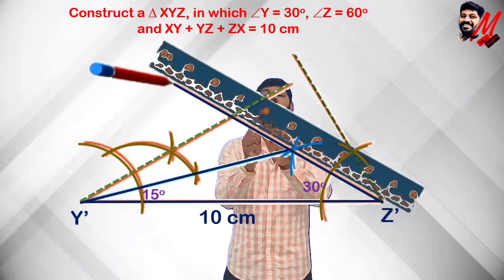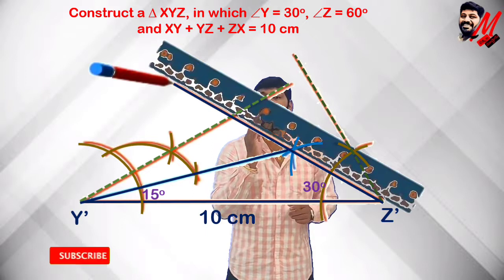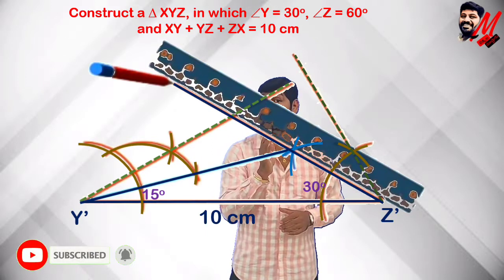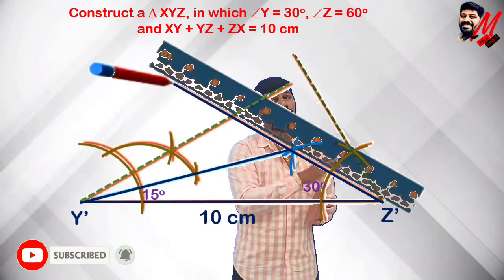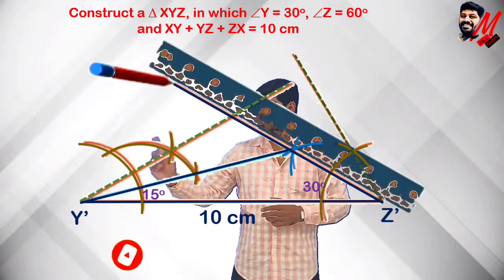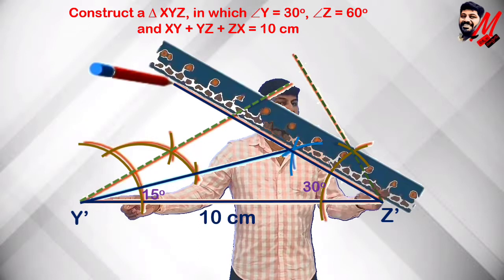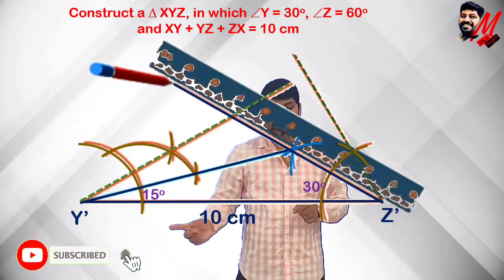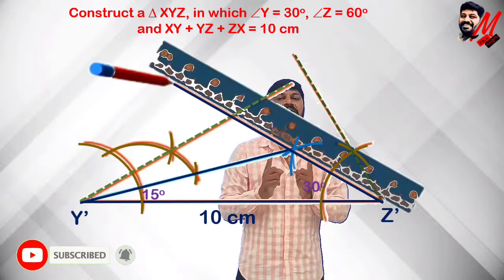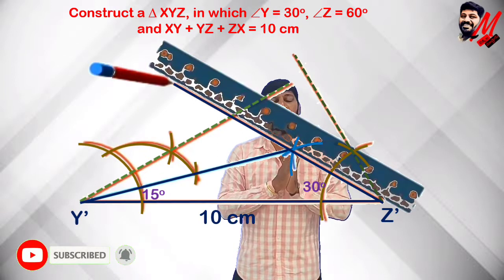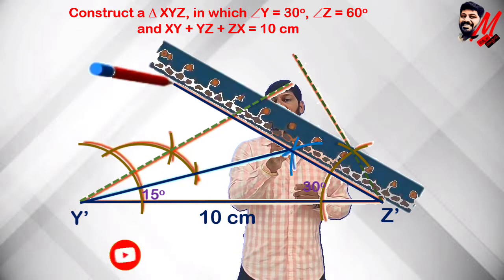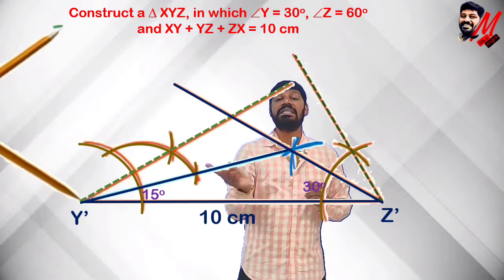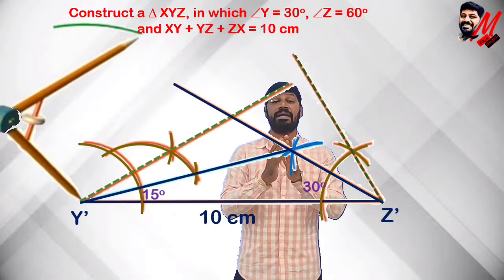Now the two rays from Y' and Z' meet at a point. That meeting point is X. So we draw the triangle X, Y', Z'. The base Y'Z' is 10 cm.